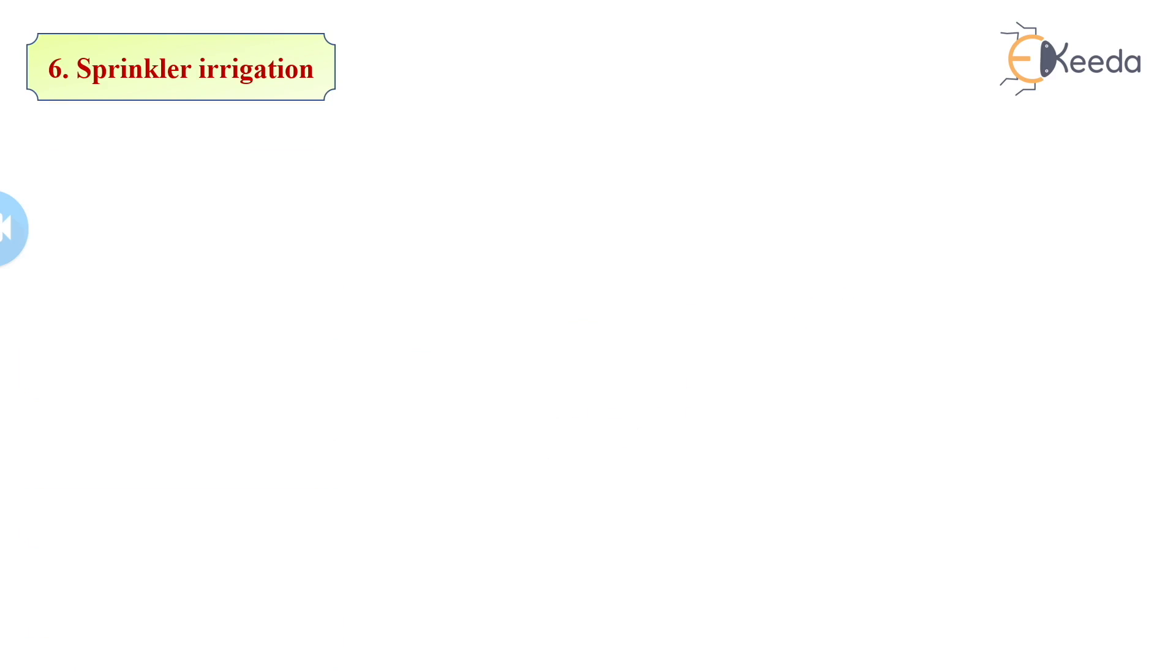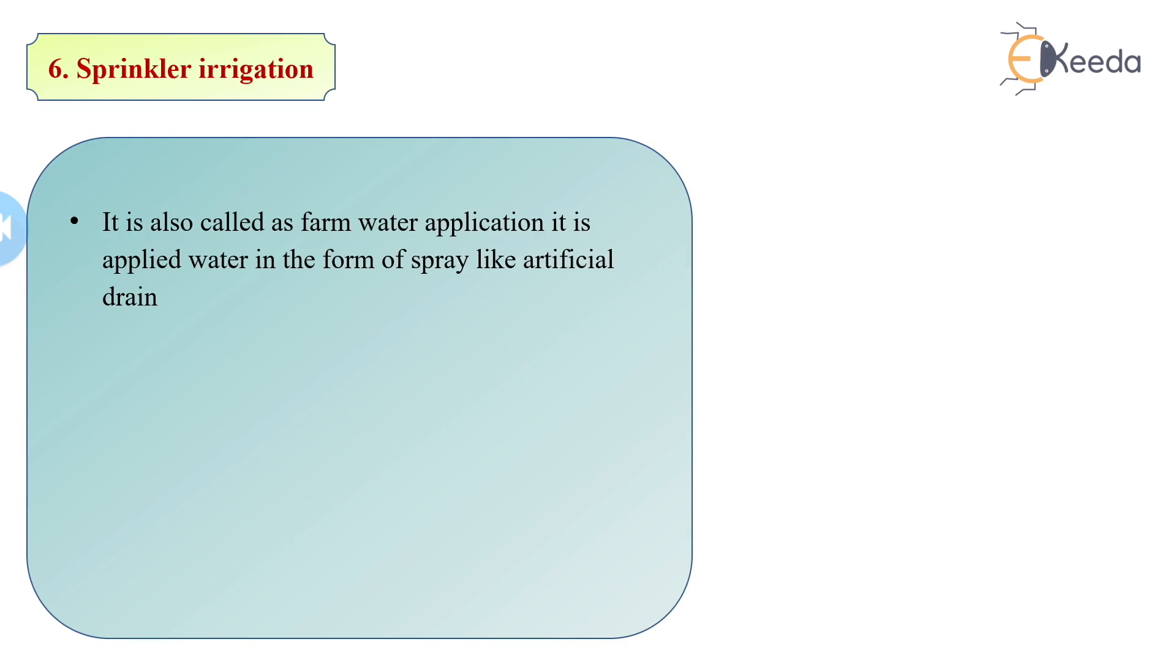Next technique is sprinkler irrigation. It is also called as farm water application. Generally, if you visit a garden, you can see there is a sprinkler fitted in the garden with continuous water supply. The sprinkler has 2 arms or 4 arms, and through these arms, water application is continuously going on. It applies water in the form of spray like an artificial rain. In this system, the cost of land preparation and permanent water delivery system of channels or conduits is less.